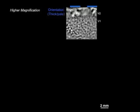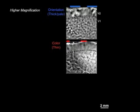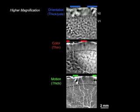If we compare the activation maps for orientation, for color, and for motion, we see that the motion activation zones fall within the thick stripes.